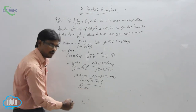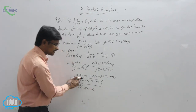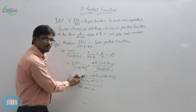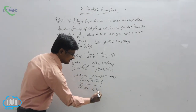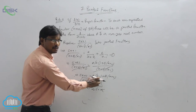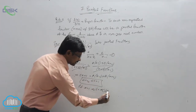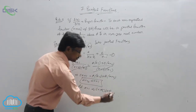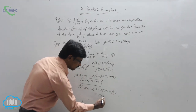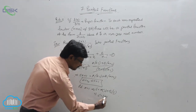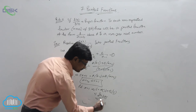Substituting x = 1: 5(1) + 1 = A(1 - 1) + B(1 + 2), which gives 6 = A(0) + B(3), so 6 = 3B. Dividing both sides by 3, the value of B is 2.